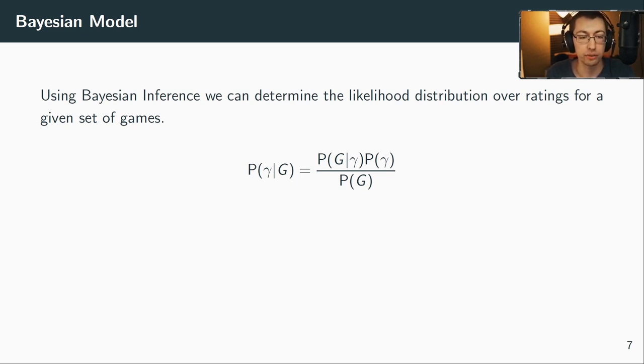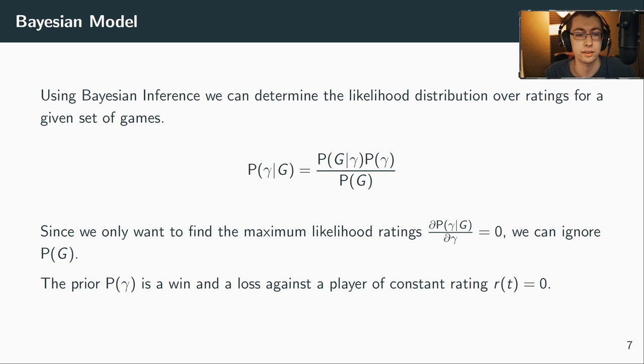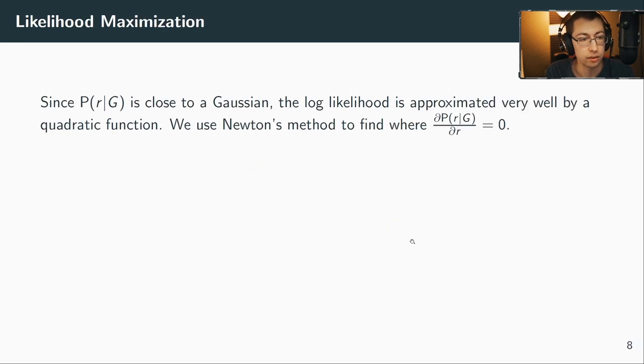So now how can we use this to calculate the ratings? We want to find the likelihood distribution over the ratings, and we do that using, as usual, Bayes' rule. You've probably seen this before. So we have the likelihood of the games happening times the prior divided by a normalization constant. We only want to find the maximum likelihood where the derivative is zero, so we can ignore the normalization constant, and to make the prior as simple as possible we simply add two more games - one win and a loss against a player of rating zero. By the way, if you guys have any questions during the presentation, feel free to write into the chat. Okay, now we have the prior and we can calculate this likelihood distribution. So how do we find the maximum? We use Newton's method. Why Newton's method? Because the likelihood distribution is a Gaussian, or very close to a Gaussian, so the derivative of the log-likelihood is a square function, so we can find the minimum using Newton's method in just one iteration.